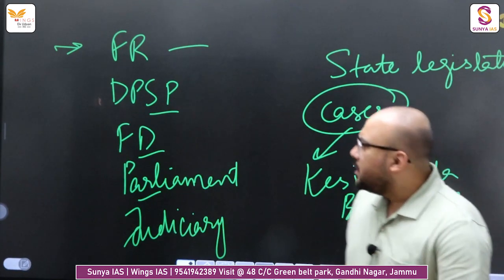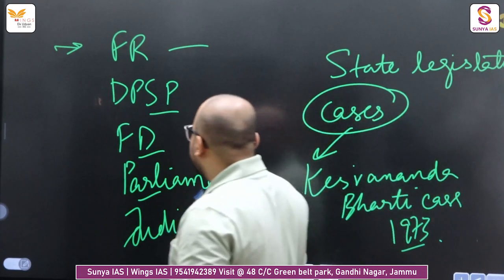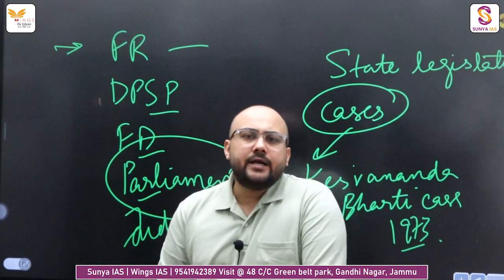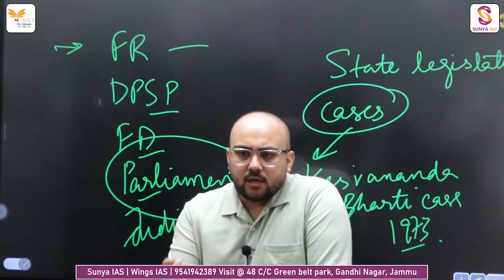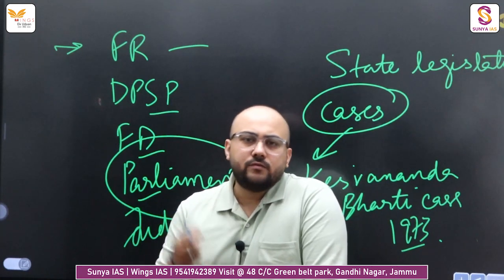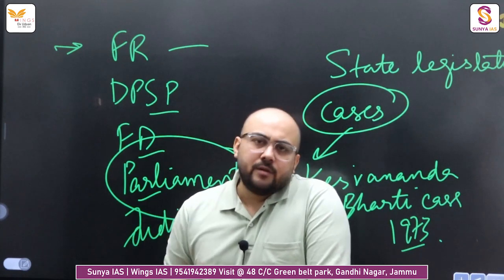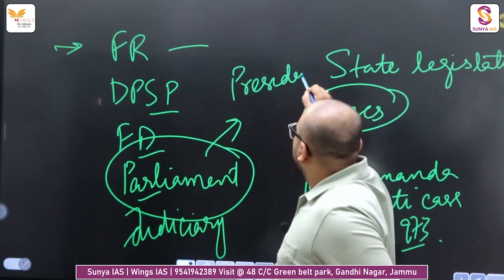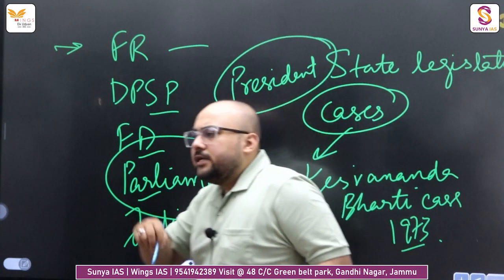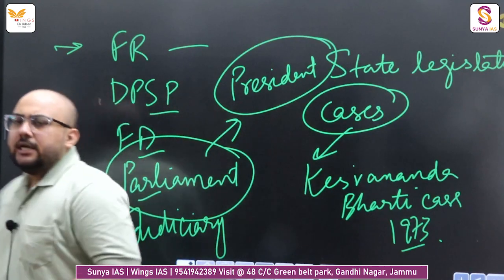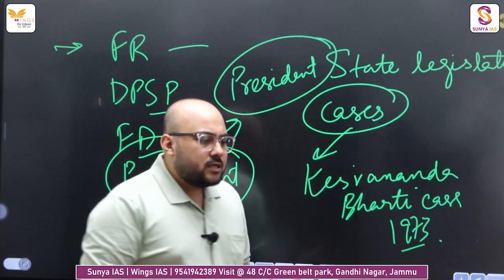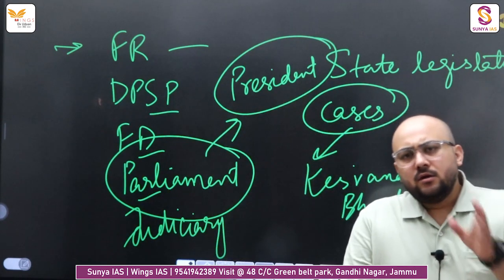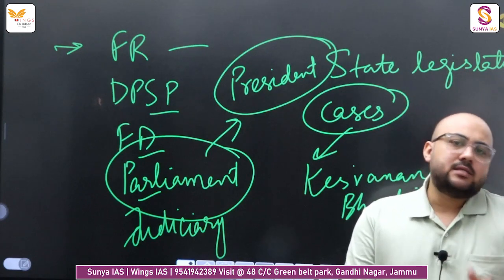First you need to focus on the base. For example, in Parliament, the important things you need to understand include the eligibility criteria for becoming an MP, the powers of the Speaker, the powers of the Deputy Chairman, and the powers of the Chairman of the Rajya Sabha. Also, the President is part of Parliament — you need to understand the President's legislative powers, financial powers, judicial powers, pardoning powers, and ordinance-making powers.